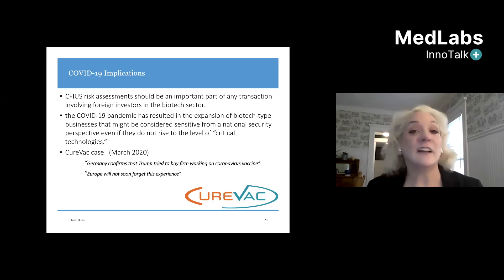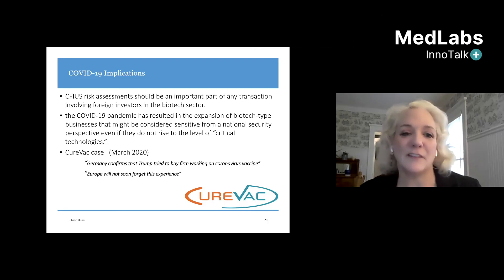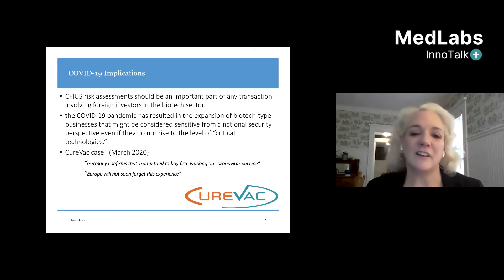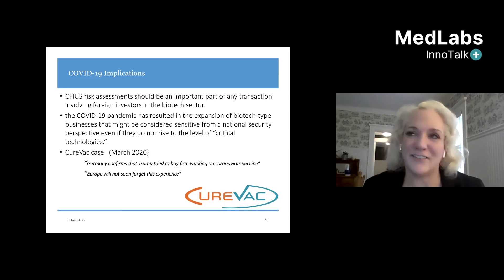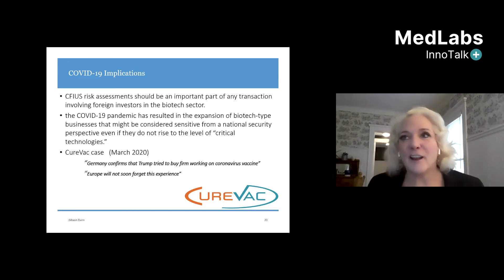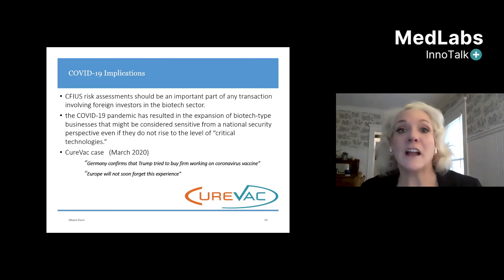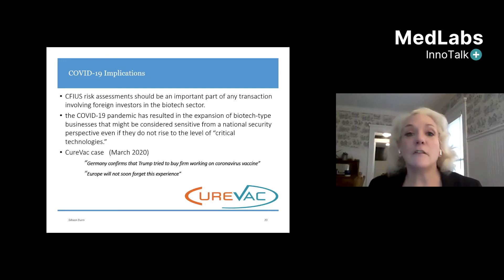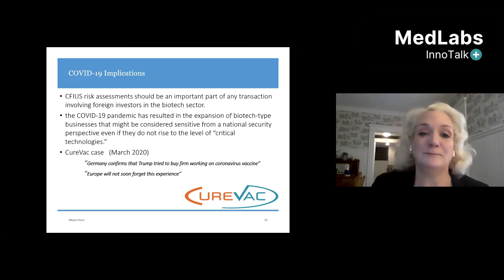It's very important to demonstrate you don't have a critical technology, but even if you don't, CFIUS can look at any transaction and must still decide whether there's a national security threat. I just wanted to remind people about the CureVac case of March 2020 — there was a rumor that the Trump administration wanted to buy this German company working on a coronavirus vaccine, bring it to the United States, and only use the vaccine on Americans. They denied it, but later the German government confirmed there were overtures by the U.S. government to buy this German company. It's kind of a reverse CFIUS situation.